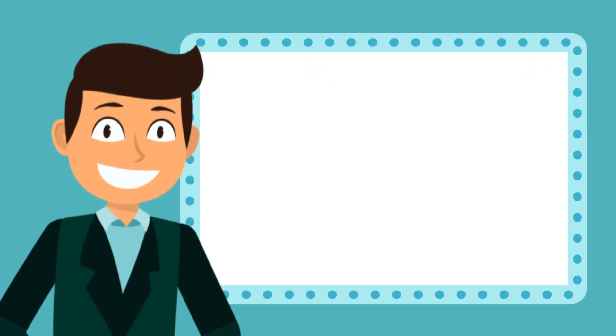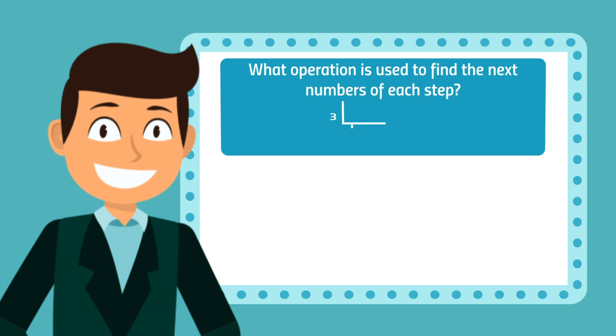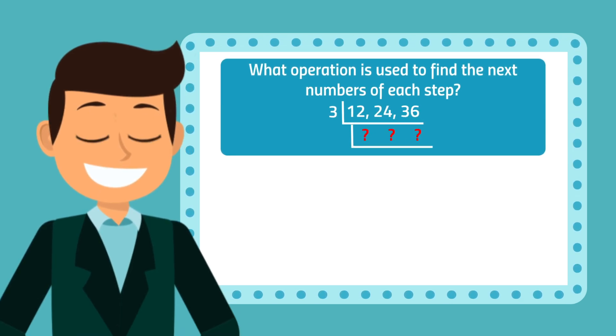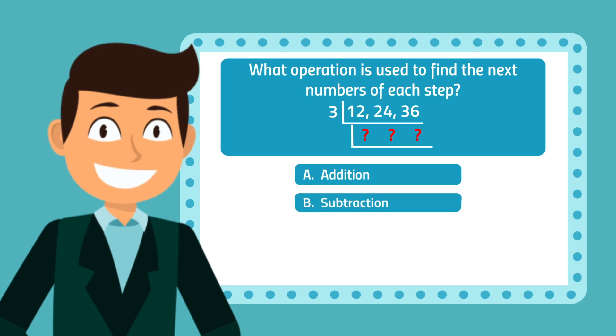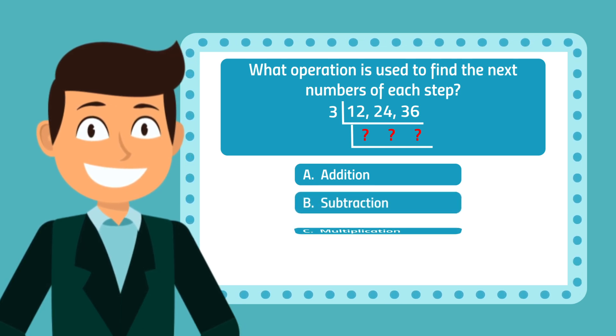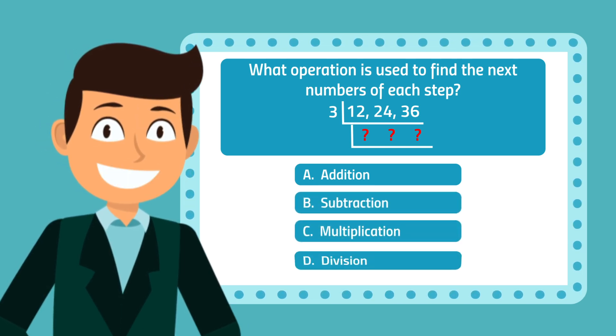Question number 4. What operation is used to find the next numbers of each step? A. Addition B. Subtraction C. Multiplication D. Division